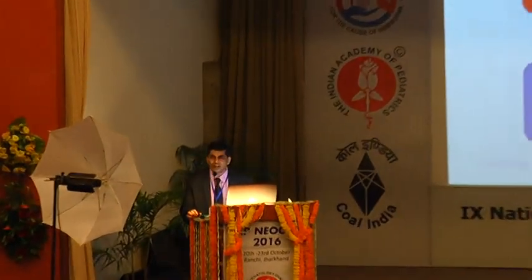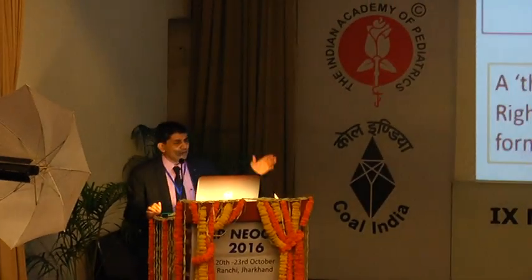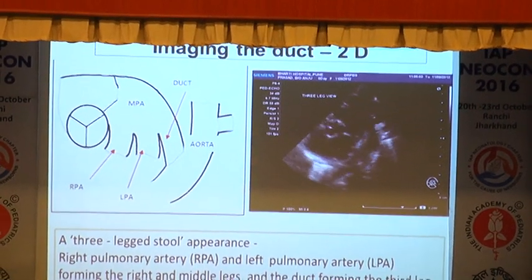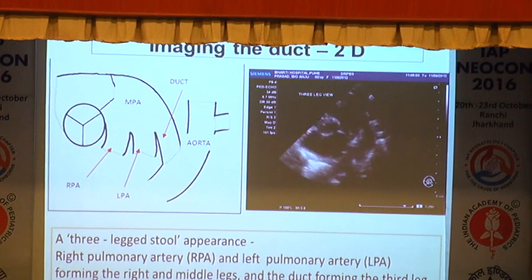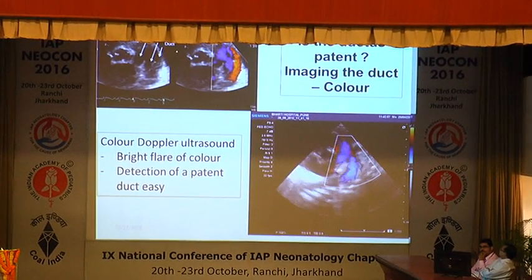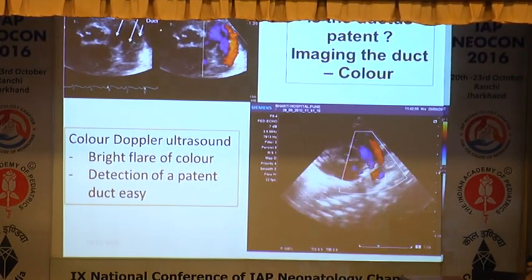With functional echocardiography, we are going to visualize the PDA, measure the size of the PDA, and determine whether this PDA is associated with pulmonary over-circulation or systemic hypoperfusion. These three criteria are assessed using functional echocardiography. A parasternal short axis view — the ductal view — allows you to visualize the duct easily. Once you apply color Doppler, you can immediately see the duct showing left-to-right flow with a bright color signal, allowing immediate diagnosis.